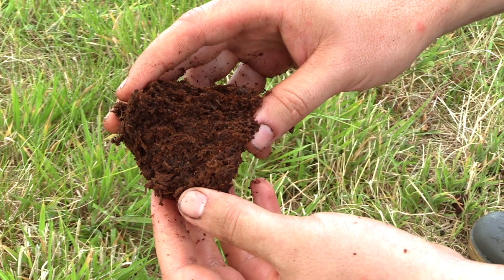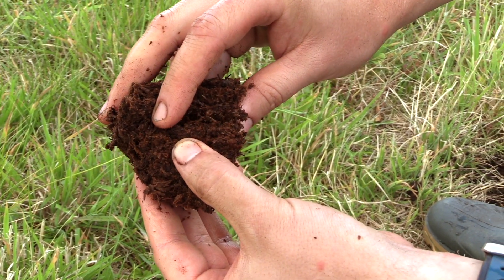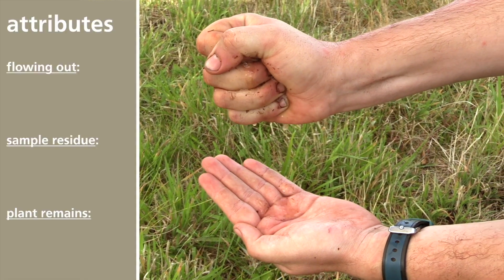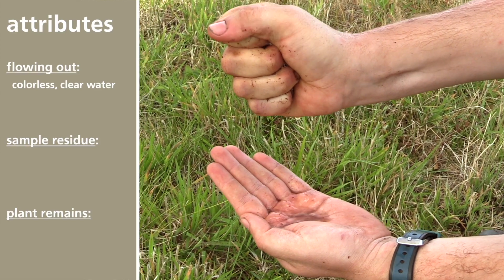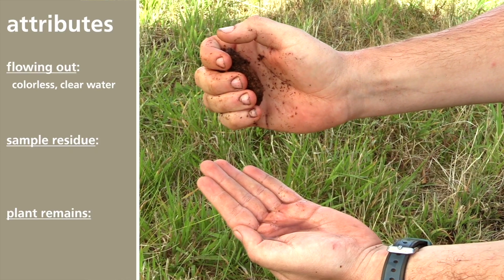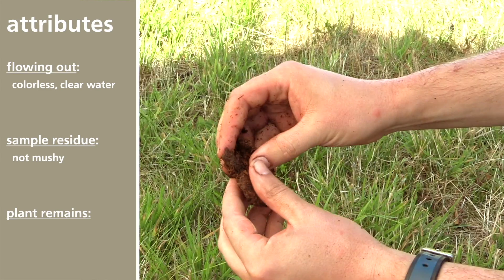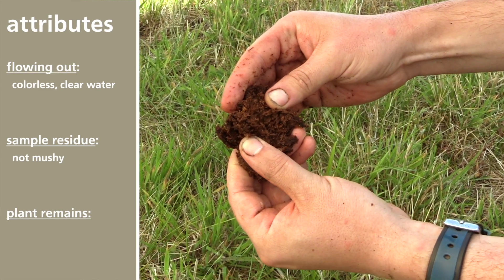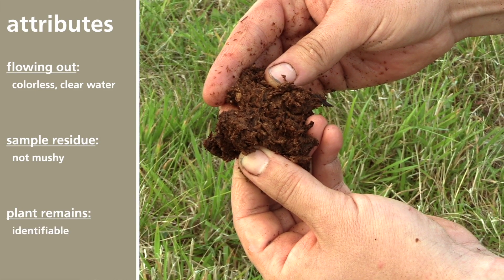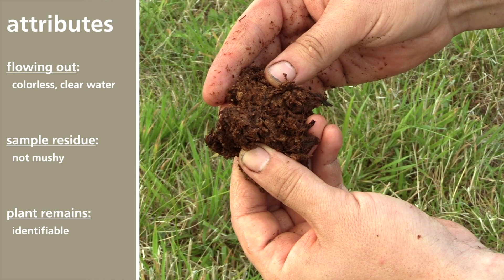We will now focus on bog soils. Here is a piece of sphagnum moss peat. When squeezed, only colorless clear water comes through. The sample residue is firm, not mushy. And the plant remains in the sample residue are perfectly identifiable, without any fine amorphous substance in between. All this leads to an H1 on the von Post humification scale. This is what undecomposed white peat looks like.